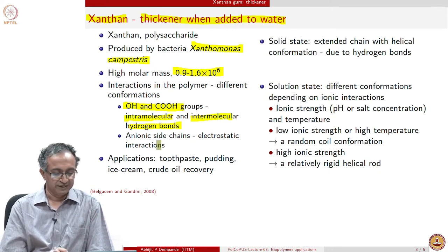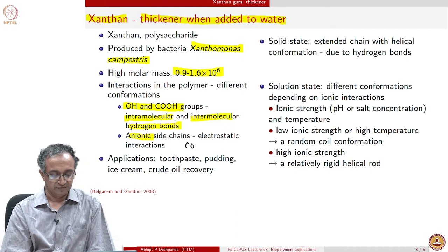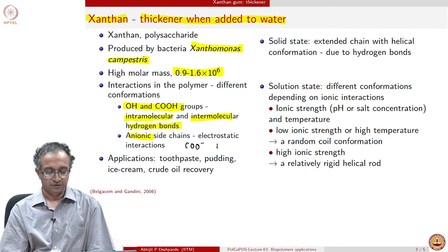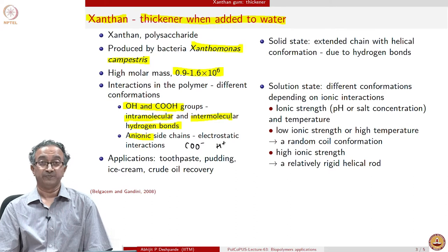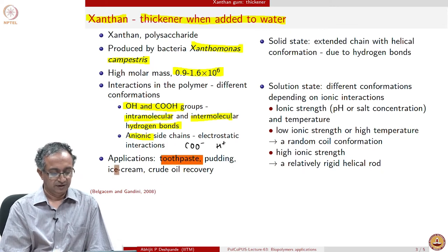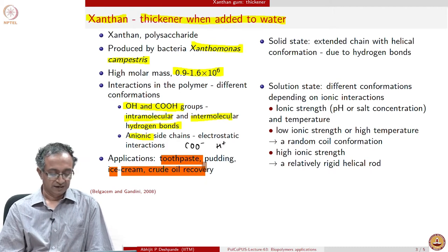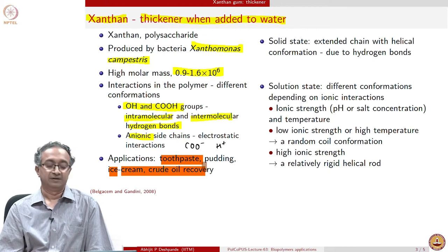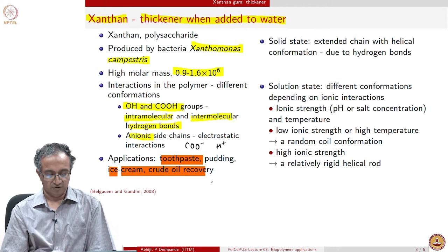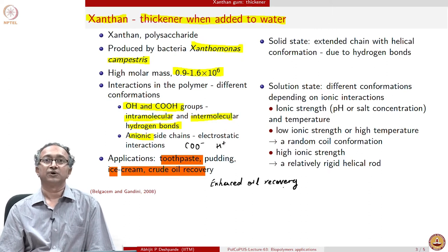Xanthan gum has mainly a backbone and there are also anions present on it. We have COO minus and of course a counter ion, which may be a proton. Its applications are various — from toothpaste and food stuffs like pudding and ice cream, to enhanced oil recovery, which is a very important application. Many gums are used in enhanced oil recovery.